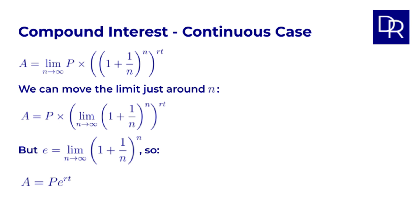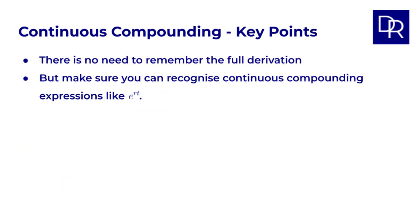P times e to the power of rt is the type of compounding expression which we will use all the time in future lessons. It includes the number e, which is a fundamental mathematical constant, like pi, and appears in many areas of mathematics and science, including finance. Don't worry if you could not totally follow the maths. The key part is that you're familiar with this type of expression, with e to the power of rt, and know that it represents some rate r compounded continuously.